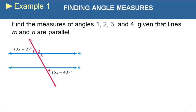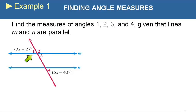In example 1, our job is to find the measures of angles 1, 2, 3, and 4, given that angle 1 is 3x + 2 and angle 4 is 5x − 40. We know that angle 1 and angle 4 are alternate exterior angles, so the measure of angle 1 equals the measure of angle 4.